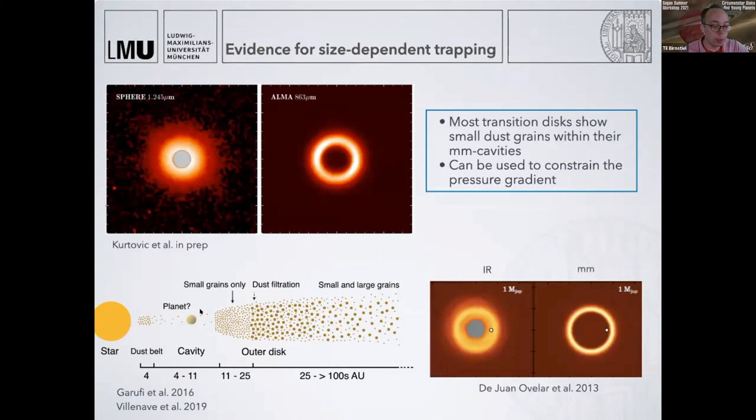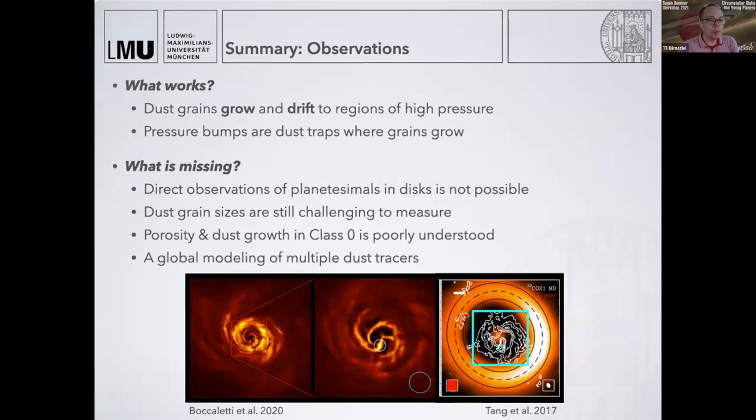It works also in those cases where we think there's a planet causing it. In the theoretical model, you would expect the small grains to extend further inward than the large grains, and that is also predicted in radiative transfer models and observed in disks. The large grains concentrate in the rings and the small ones extend further out and inward.